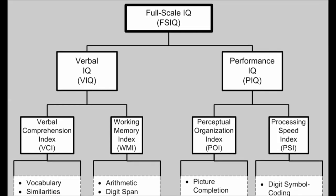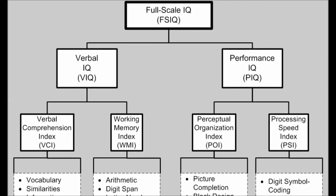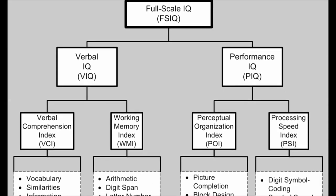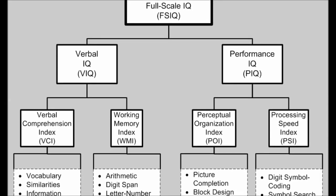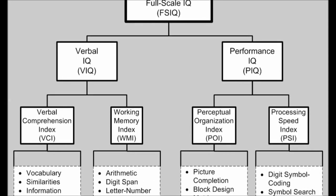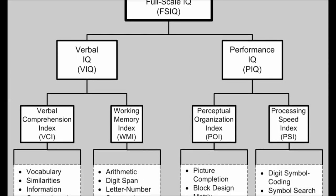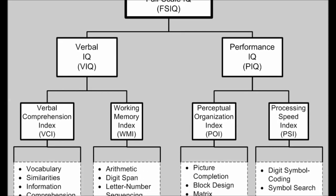The Wechsler Adult Intelligence Scale is used to measure intelligence in adults and adolescents. The median score is set to 100 and has a standard deviation of 15.